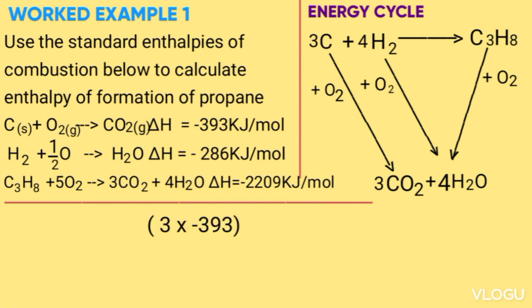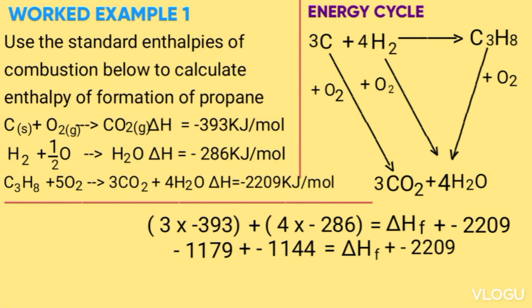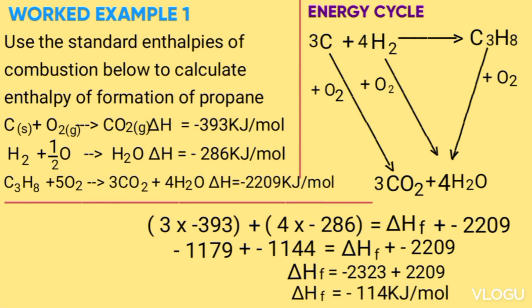The calculation is as follows: 3 × (−393) + 4 × (−286) = ΔH_formation + (−2209). This gives −1179 + (−1144) = ΔH_formation + (−2209). Collecting like terms: ΔH_formation = −2323 + 2209 = −114 kJ/mol.